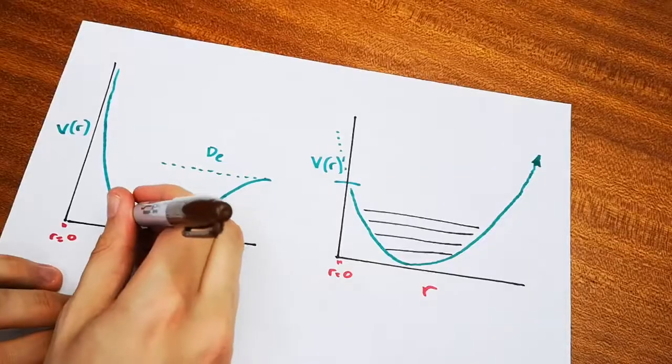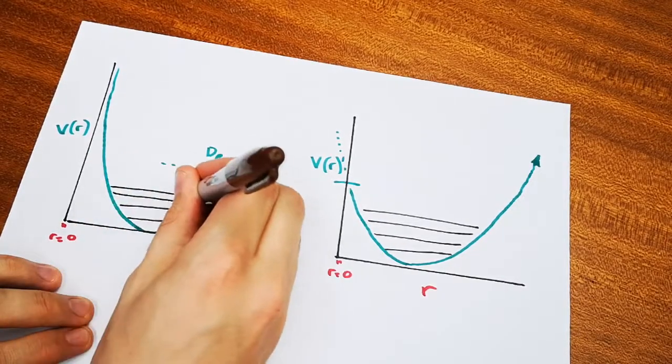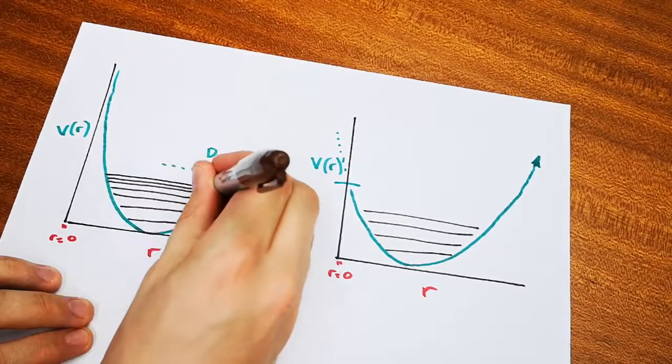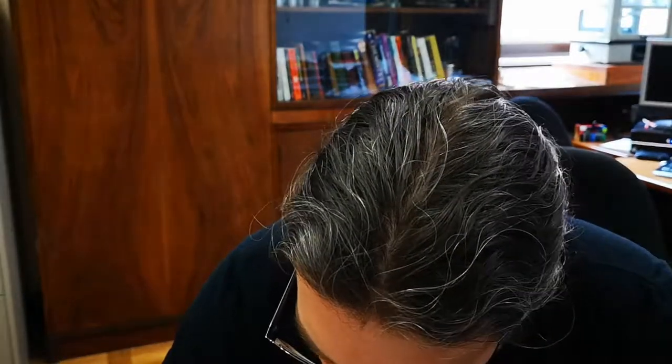Anharmonicity has an effect on spectra because of this bunching of the energy levels. They're not exactly as predicted by the harmonic oscillator, and it's these spacings that we actually begin to see on a spectrum.